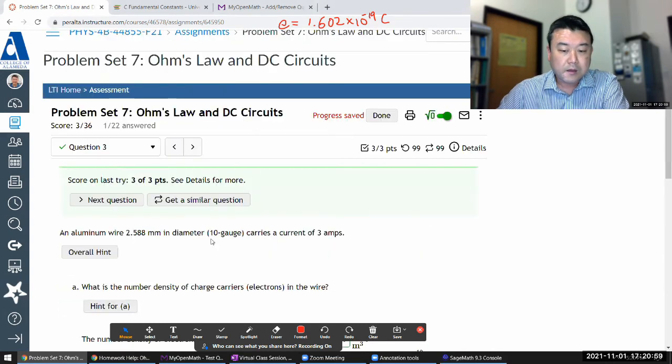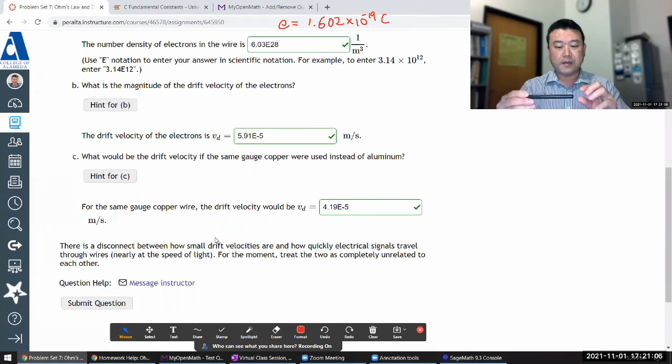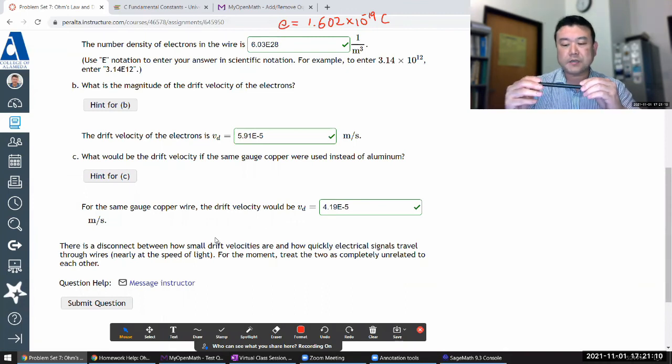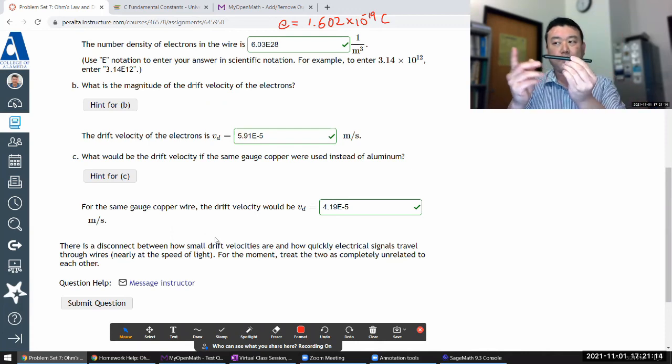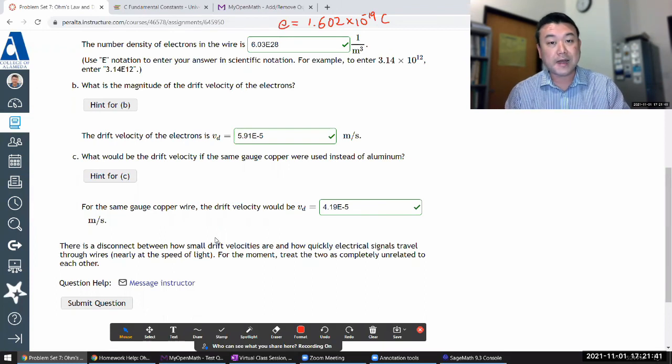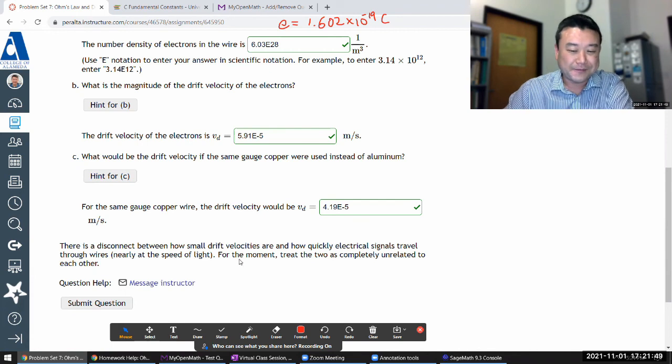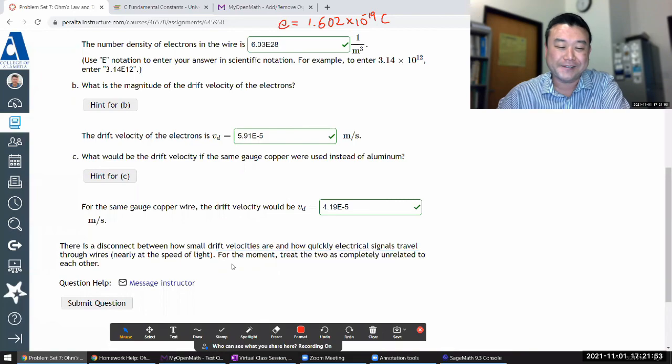There's a disconnect. You can kind of imagine it this way. The electrons in a wire - if you had something solid and when you started pushing on one end of the solid object, then the other end almost seems to instantaneously move, even though the speed of each individual piece is relatively low. With a solid material like this, what limits how quickly signal is transmitted is the speed of sound in the material. And in a wire, what's analogous to speed of sound is speed of light, the speed at which electromagnetic signals can be transmitted. So for the moment, treat the two as completely unrelated to each other.